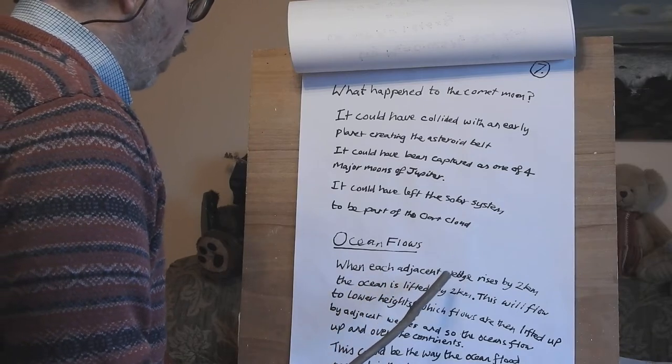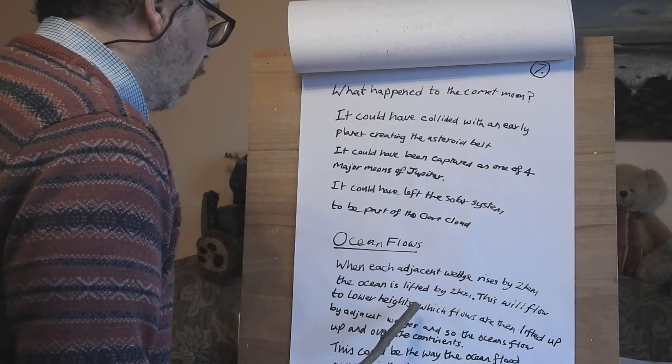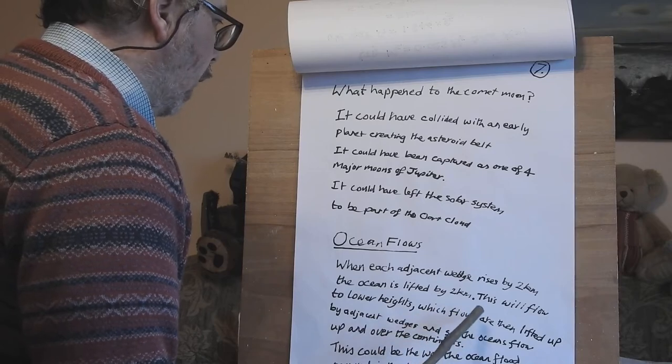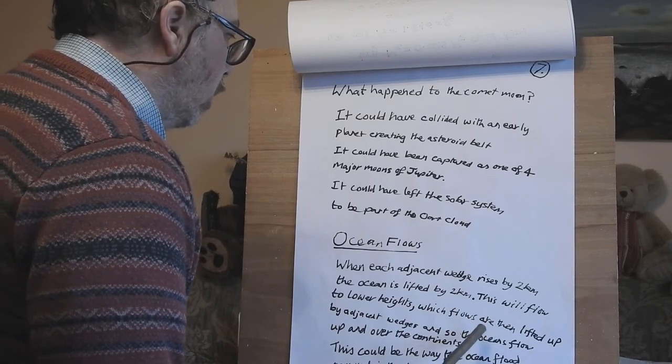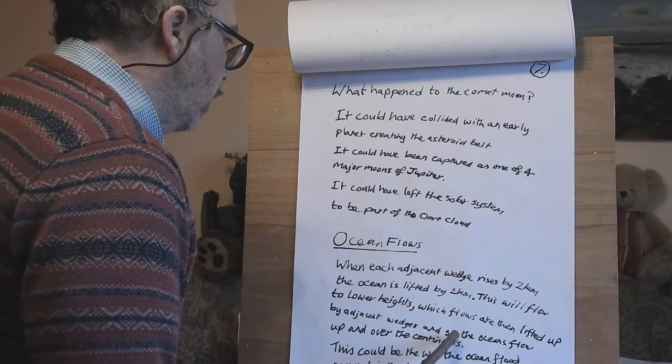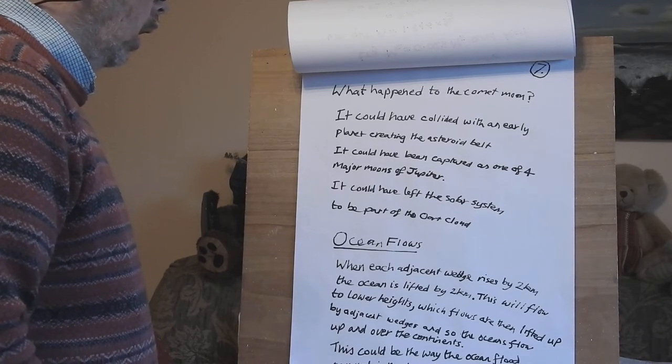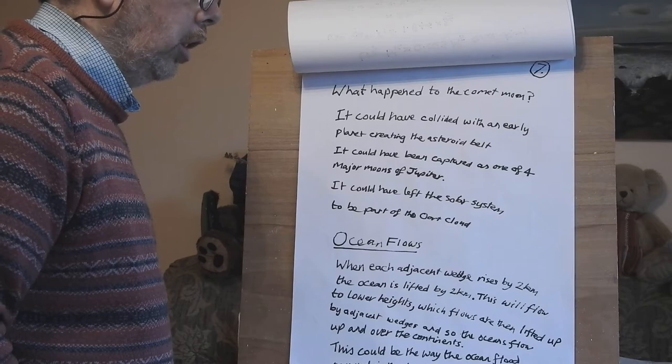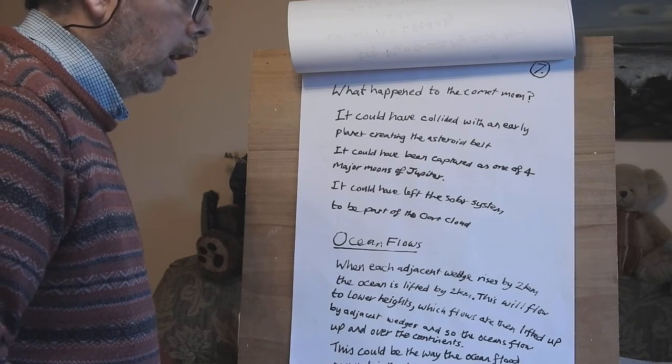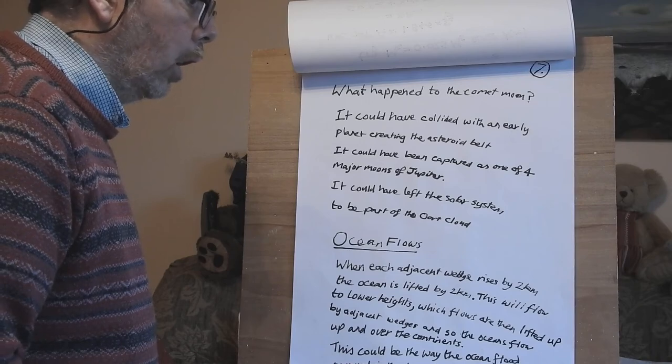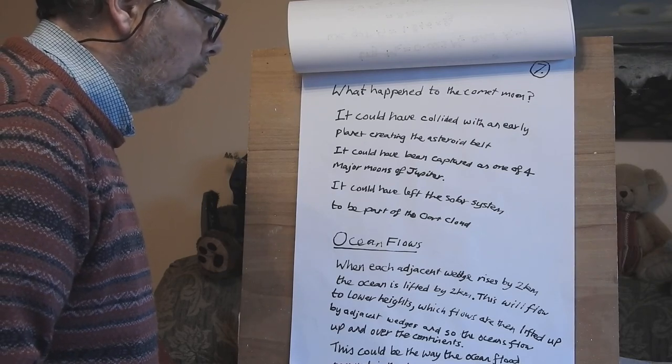Ocean flows. When each adjacent wedge rises by two kilometer, the ocean is lifted by two kilometer. This will flow to lower heights, which flows are then lifted up by adjacent wedges. And so the oceans flow to and fro, backwards and forwards, up and over the continental land masses. This could be the way the ocean flood occurred in the days of Noah, which you can find out about if you read your Bible in the book of Genesis. It's an account of Noah and the flood and the ark and the animals. So read up in it and it should be quite good.